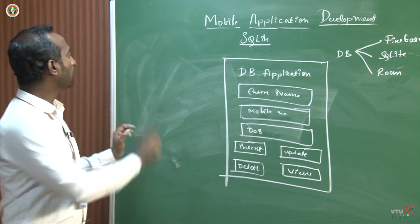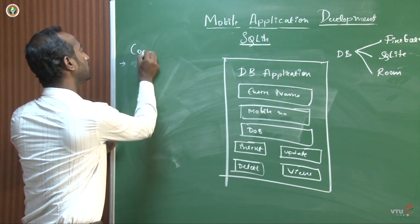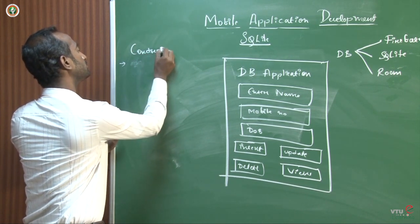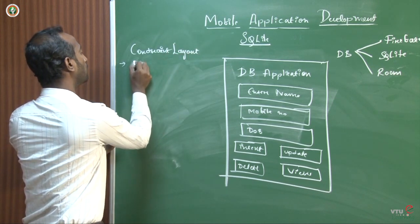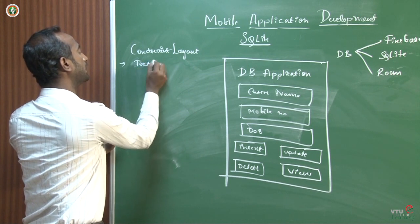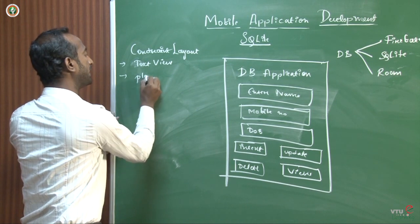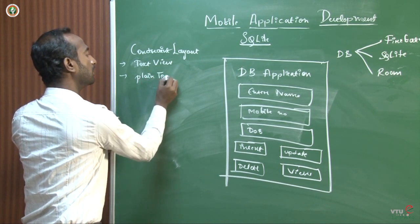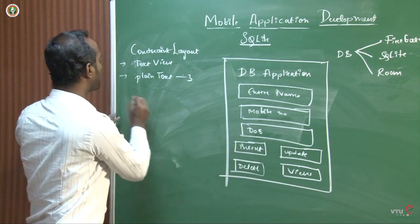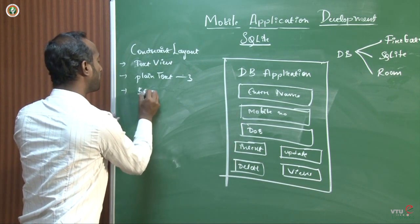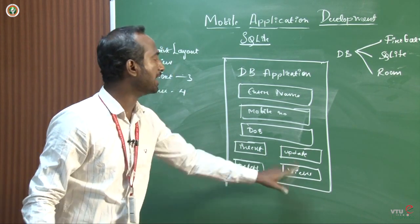For the design I am going to use constraint layout. There will be one TextView for the title, three plain text EditTexts for name, contact, and date of birth, and four buttons — one for insert, one for update, one for delete, and one for view.